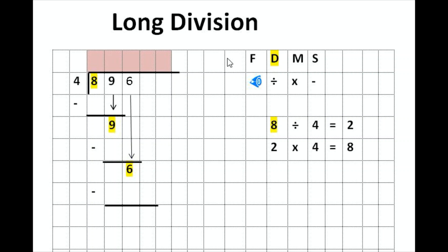I'm taking my hundreds digit as my first focus number. As you can see on my right-hand side, I've got the letter F written there. F stands for focus number. So we're going to focus on one digit at a time. We're going to focus on my hundreds digit first — that's going to be my first focus number. My second focus number is brought down to the second part of the sum, and my third focus number is brought down to the third part. So I have separated my digits and I'm focusing on them one at a time.